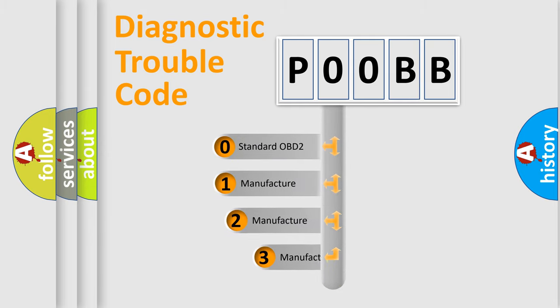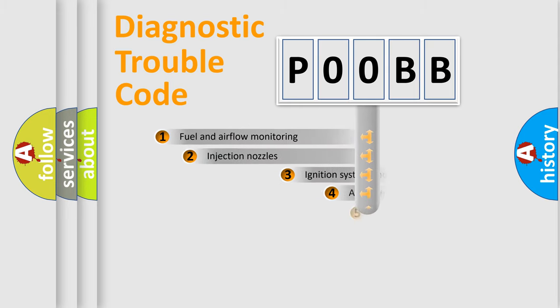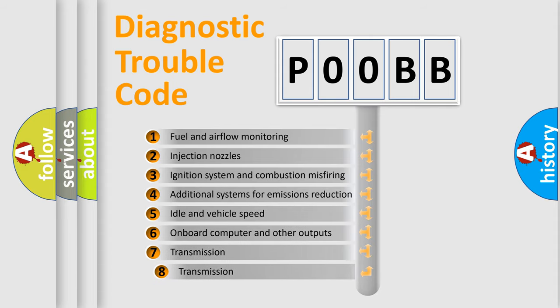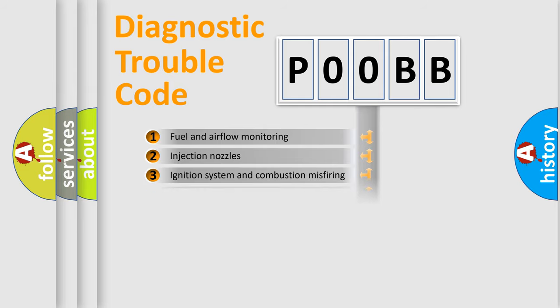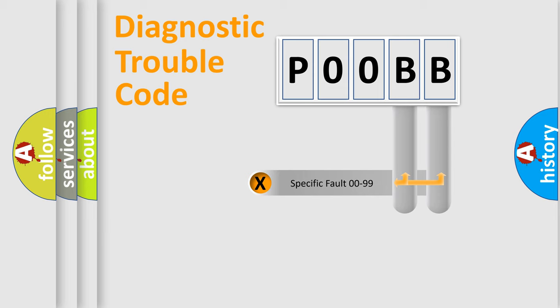If the second character is expressed as zero, it is a standardized error. In the case of numbers 1, 2, or 3, it is a manufacturer-specific error expression. The third character specifies a subset of errors. This distribution is valid only for the standardized DTC code, and only the last two characters define the specific fault within the group.